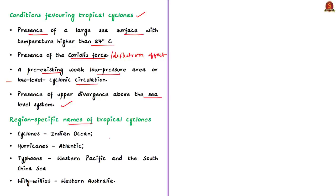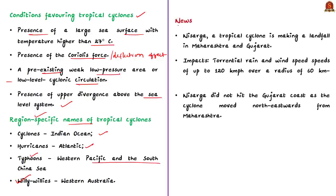Tropical cyclones are given region-specific names: they are called cyclones in the Indian Ocean, hurricanes in the Atlantic Ocean, typhoons in the Western Pacific and South China Sea, and Willy-Willies in Western Australia. With this information, let's take up the news article.